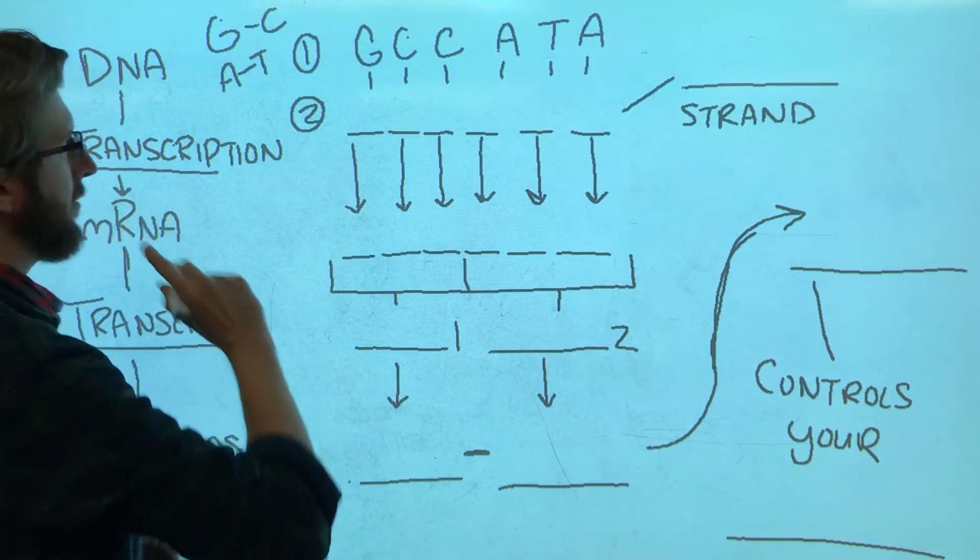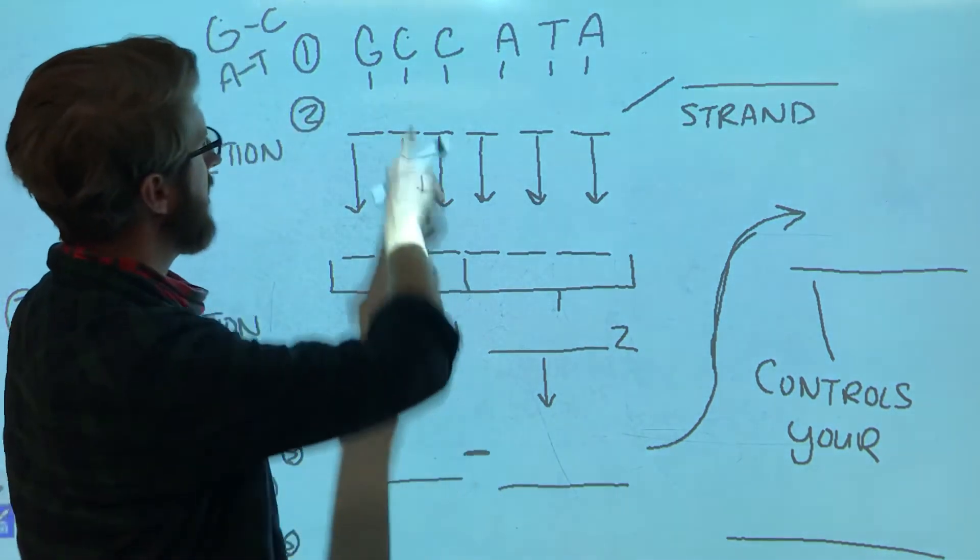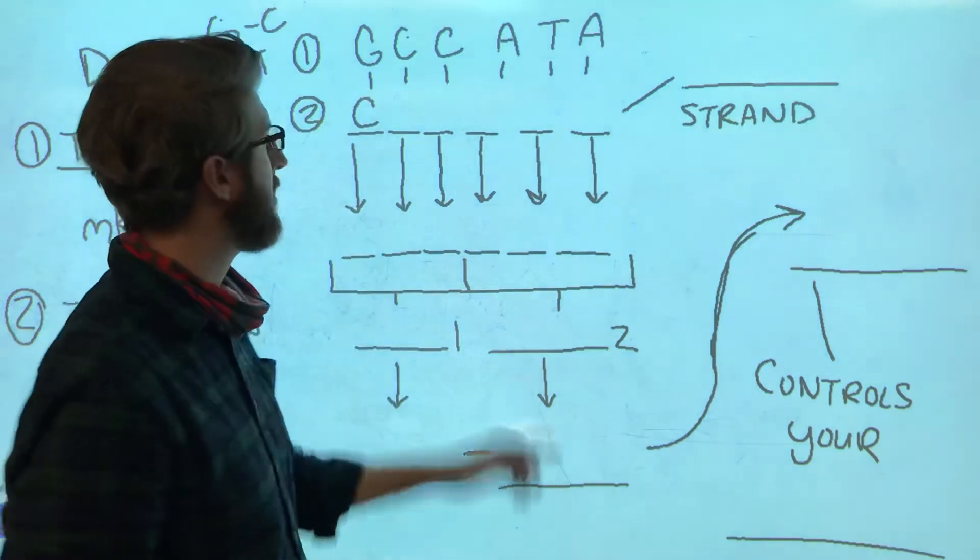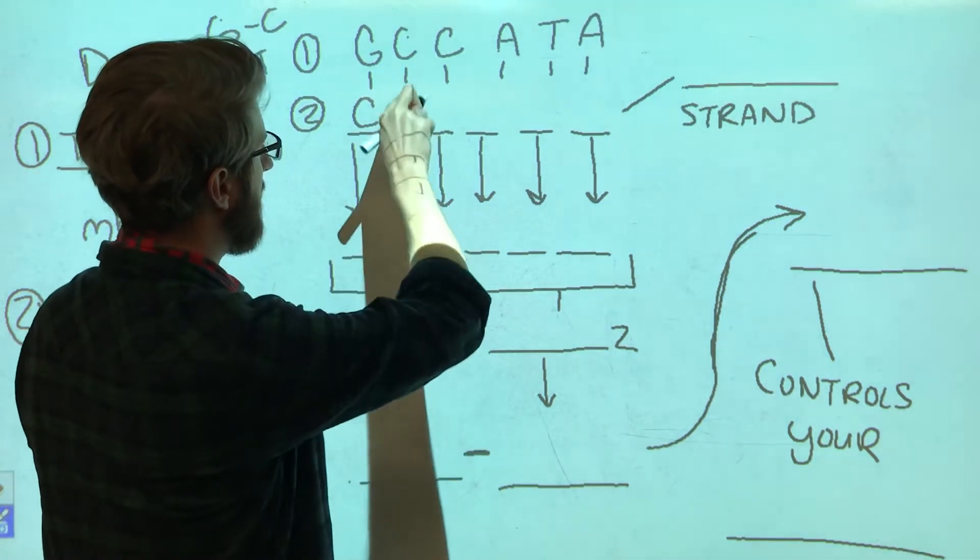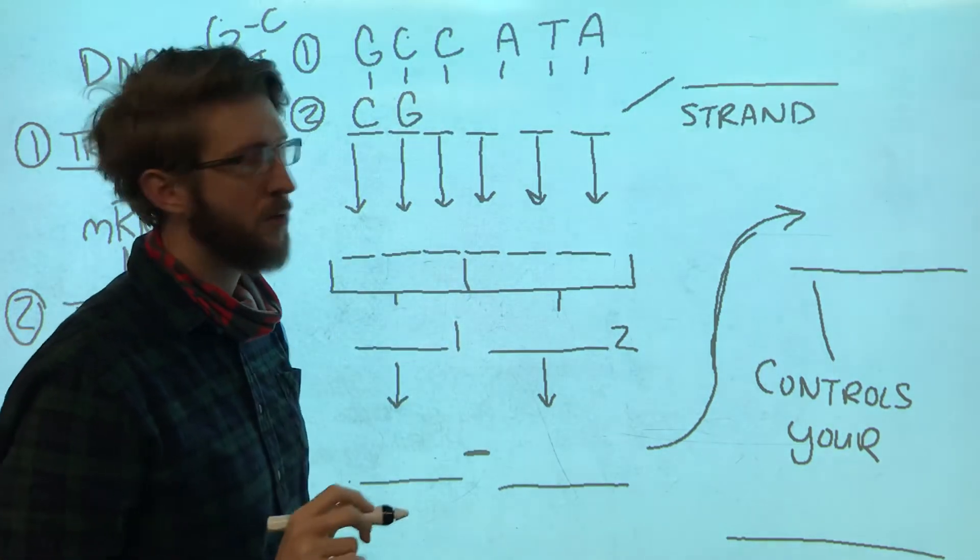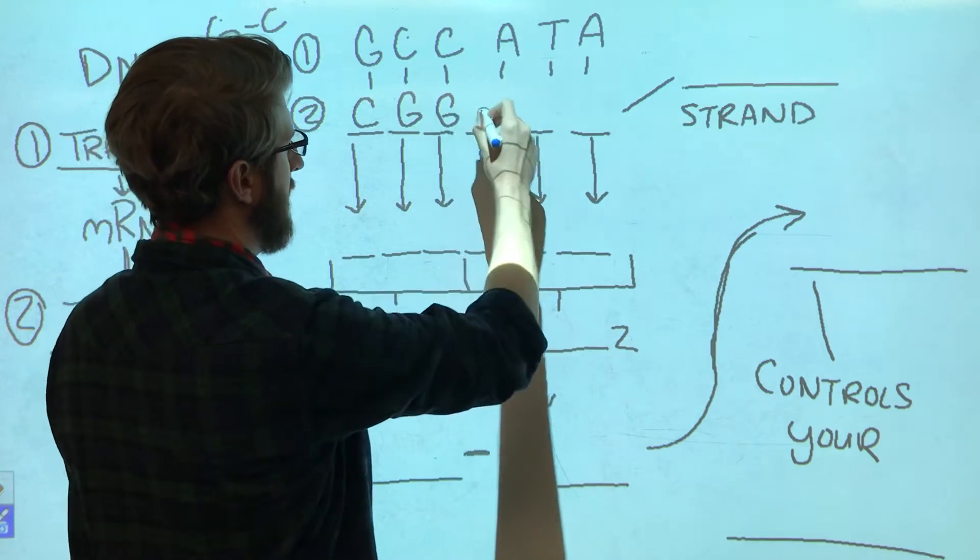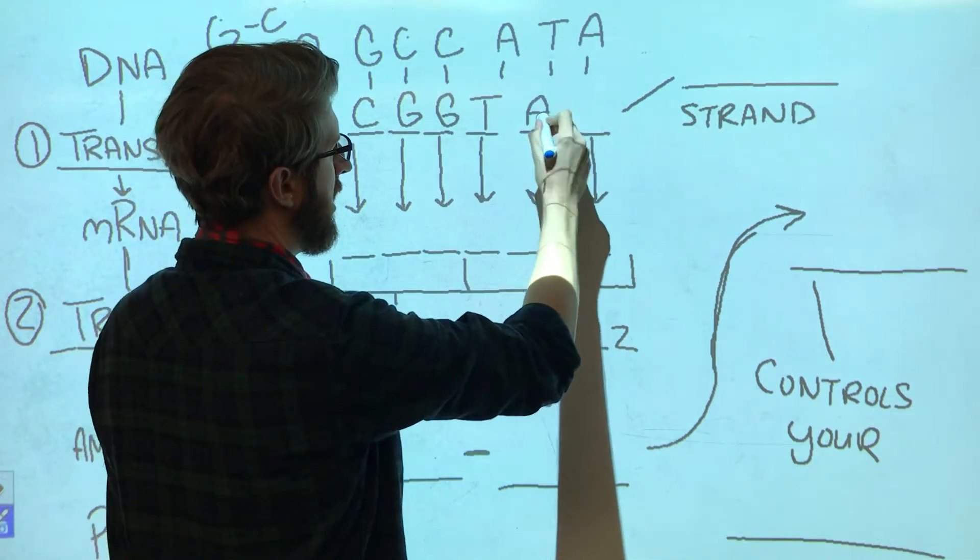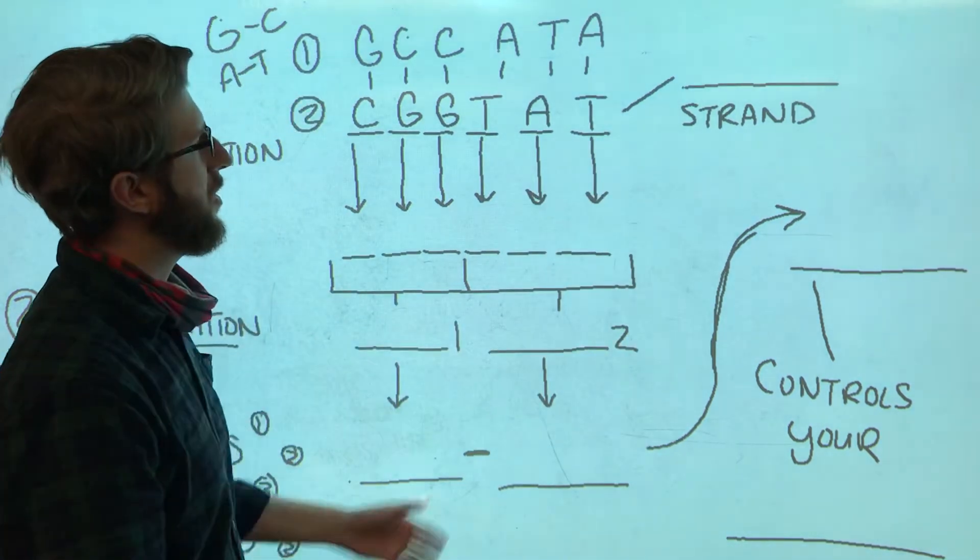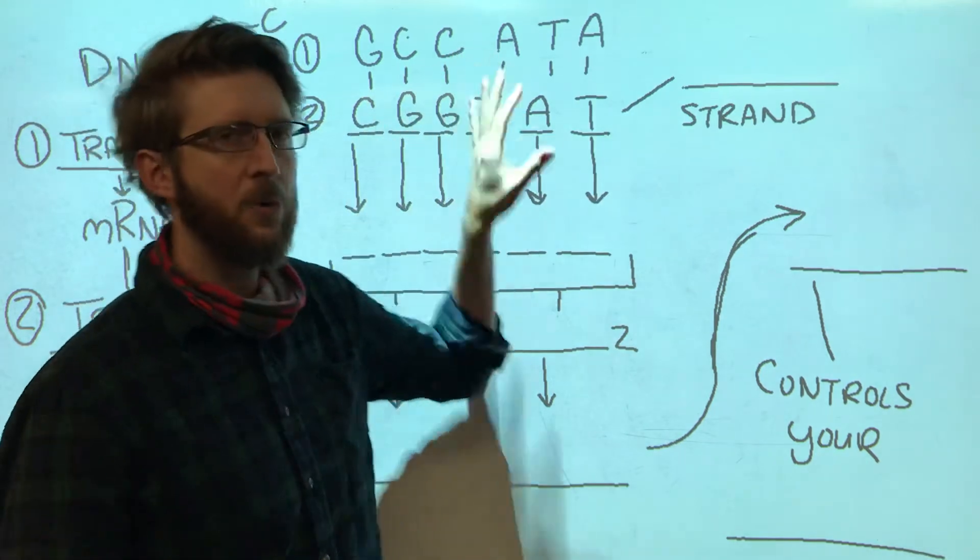So if there's a G across from it, you will always find a C. If there's a C across from it, you will always find a G, because those two always go together. C-G, A-T, T-A, A-T. So we just completed our second strand of DNA.